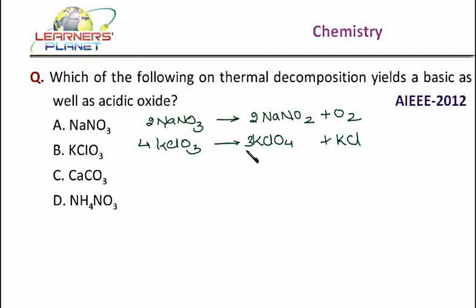Now, in the next step, what happens? This KClO4 again dissociates to give KCl, that is potassium chloride and oxygen. So, the two options are ruled out.